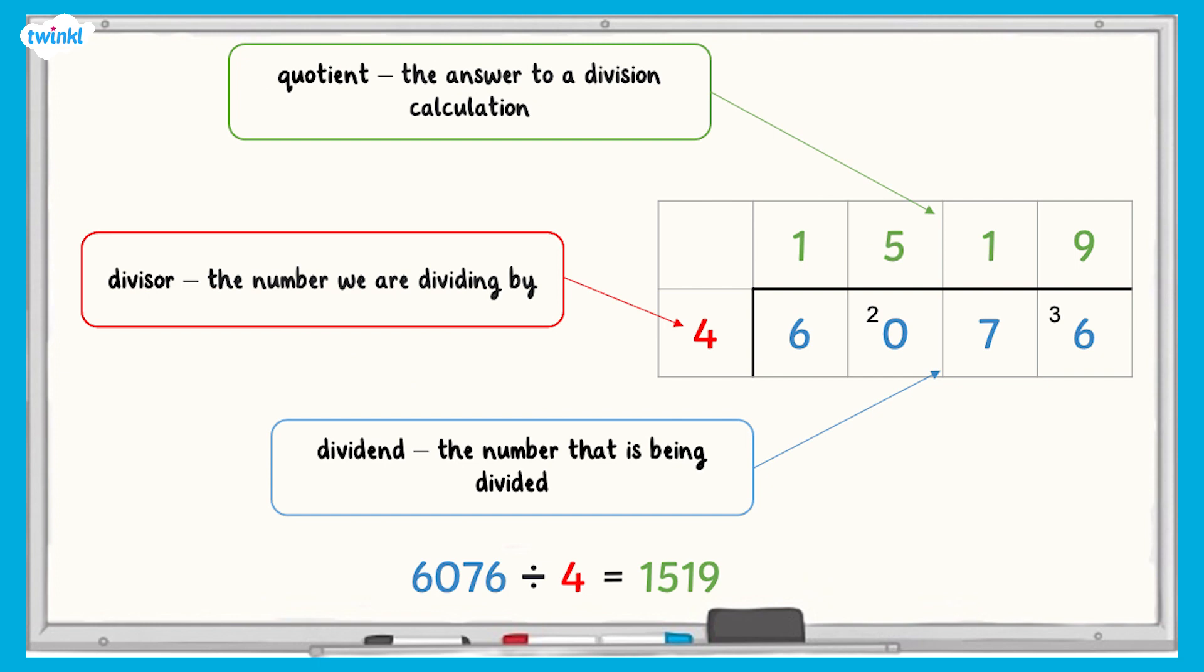That's right, the dividend goes underneath the line, the divisor goes to the left of the line, and the quotient goes above the line.